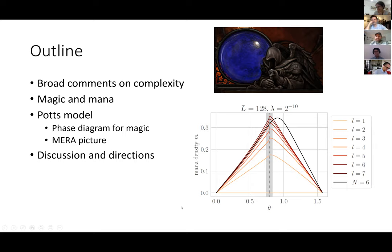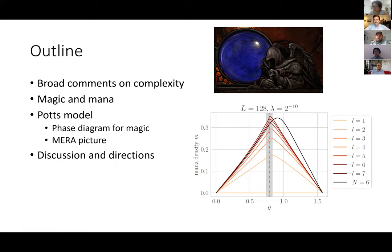That's what this little graph here shows. The X-axis is the model parameter, which can vary between two different phases: a ferromagnetic phase where the spins align, and a paramagnetic phase where they don't align. Our result is that the mana is largest — and hence the magic is largest — at the critical point. That critical point in the long distance limit corresponds to a three-state Potts CFT, and hence we conclude that the CFT is magical in the sense of being the most magical point in the entire phase diagram.